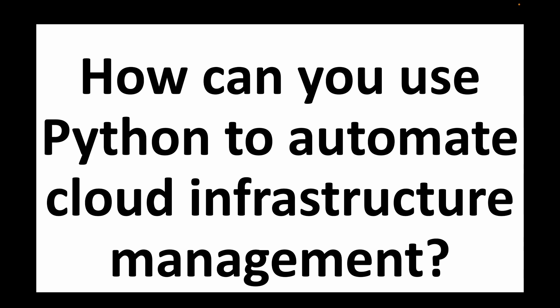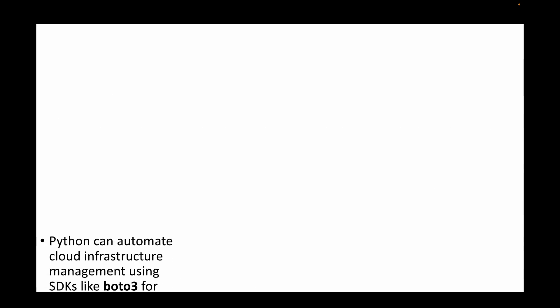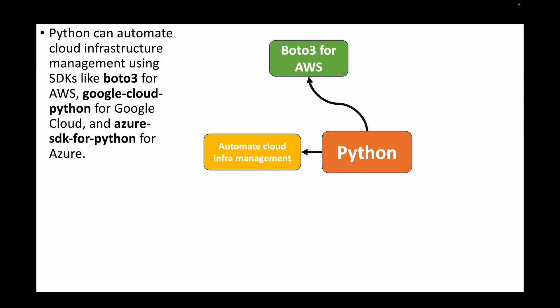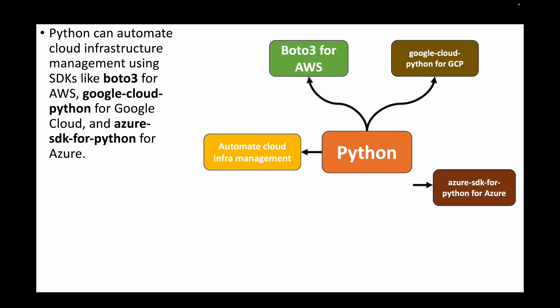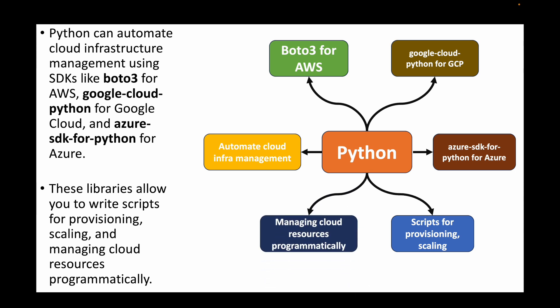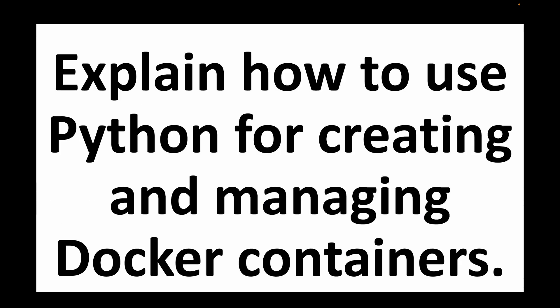The next question is: how can you use Python to automate cloud infrastructure management? We can write Python scripts to automate infrastructure management on the cloud using SDKs: boto3 for AWS, the Google Cloud Python library for GCP, or the Azure SDK for Python. Based on the cloud platform you're using, the respective SDK allows you to write code for provisioning, scaling, and managing resources programmatically from Python itself.